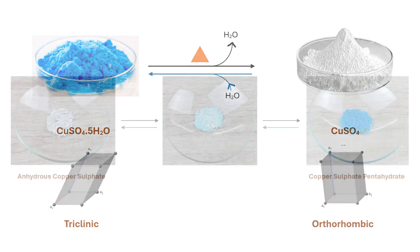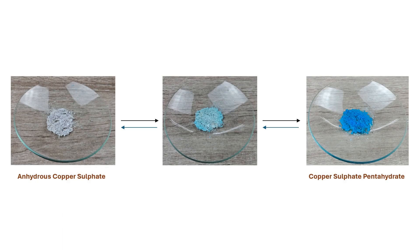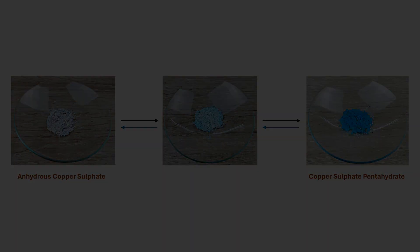This reverse process of regaining its water of crystallization is evident from a change in color from white to sky blue and then finally to deep blue. This experiment thus proves that hydrated copper sulfate contains water of crystallization.